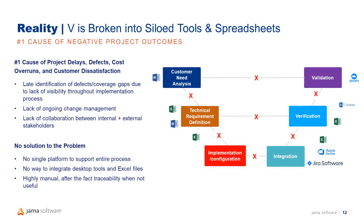But for teams using Word and Jira, their V often looks like this. Notice all the red X's identifying broken coverage. The customer needs may be captured in Word or some other document-based tool. Maybe there's an effort to break these down into requirements in Word or Excel, but there's no connection between these, so there's really no way to make sure that every need is covered with a requirement. Perhaps at some point the requirements are transferred from Word or Excel into Jira in the form of user stories, but again there's no connection back to the requirements or the customer needs. So if your teams are siloed and lack good collaborative capabilities, you could wind up with implementations that fail your verification and worse, even your validation — basically spending time building something that does not satisfy those customer needs.